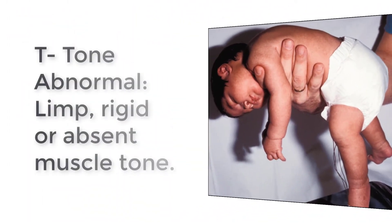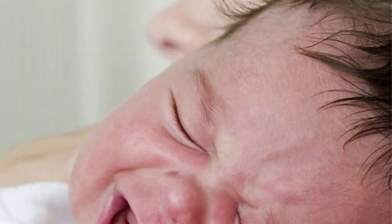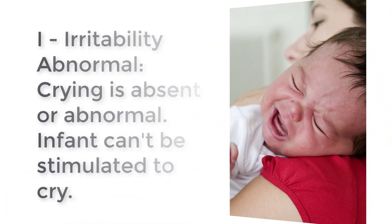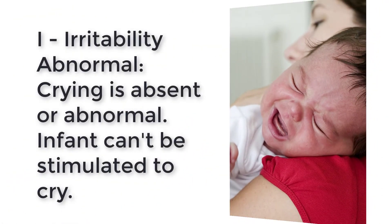First, let's look at tone. Does the child have abnormal muscle tone — are they limp or rigid, or is muscle tone totally absent? If they're normal, they'll have good muscle tone, they'll be moving their extremities, and infants will strongly resist any attempt to straighten out their limbs.